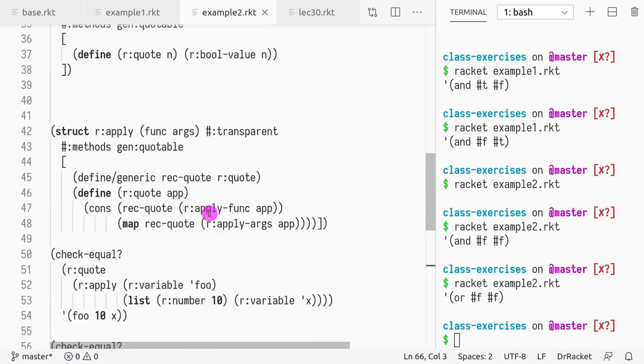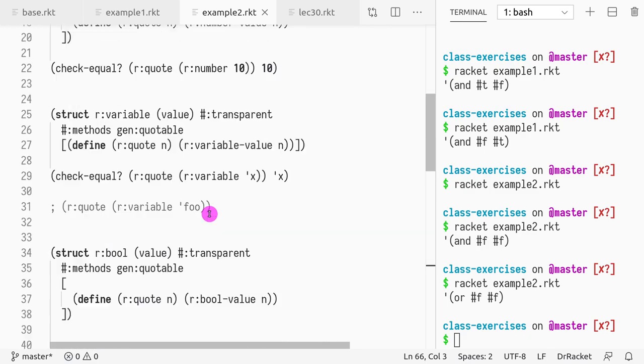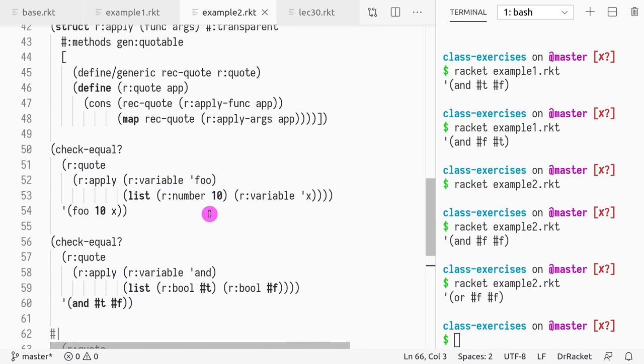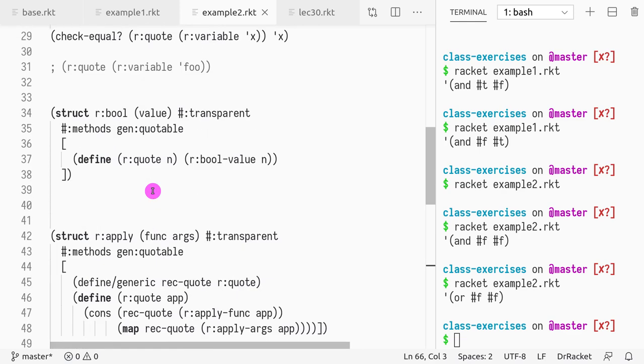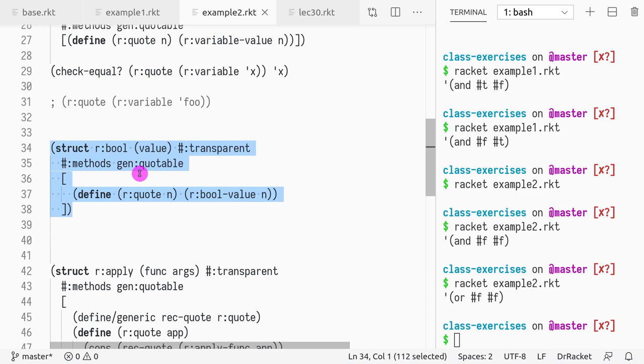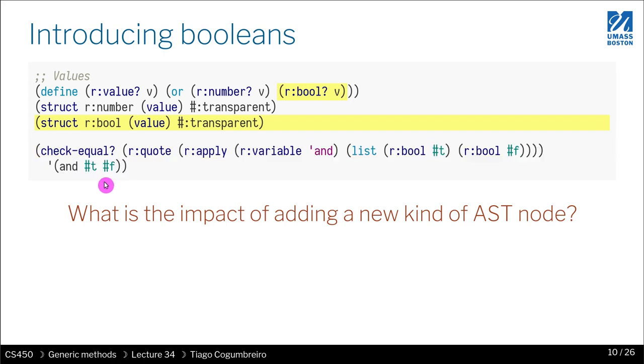Fair enough. We have the implementation. We extended the code to support booleans. What did we have to do? We simply created a new structure. We didn't touch anything else. We just defined the new branch directly with the structure. We didn't have to change the rest of the code. This is actually a major difference. Let's look at the pros and cons in the next slide.